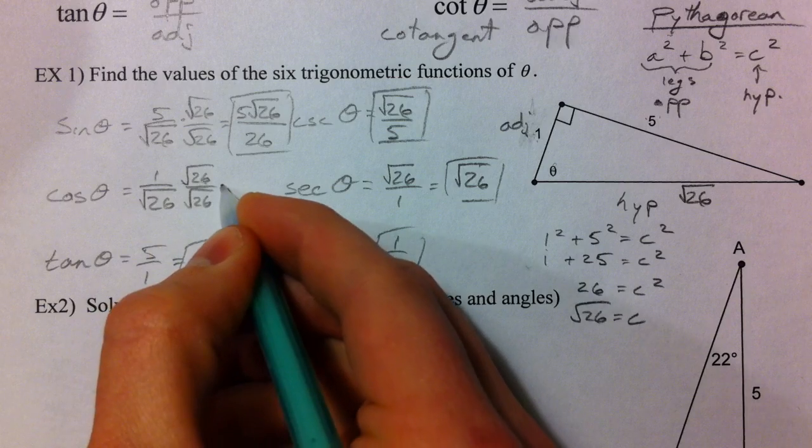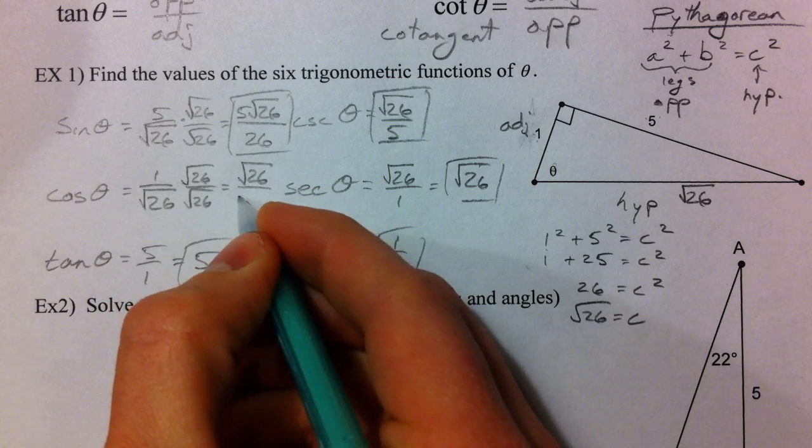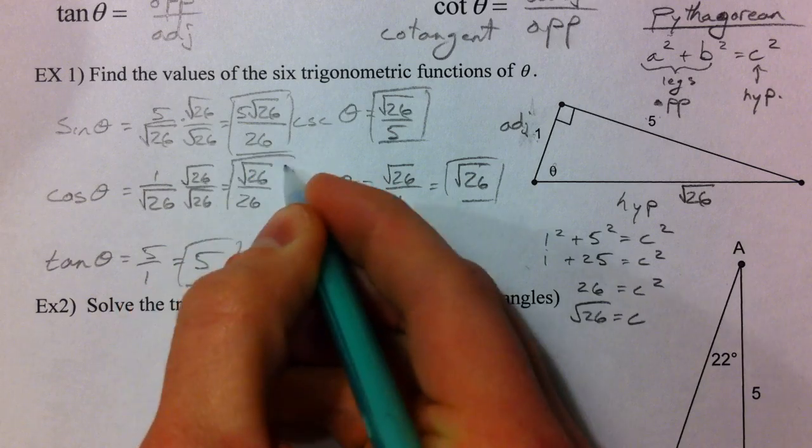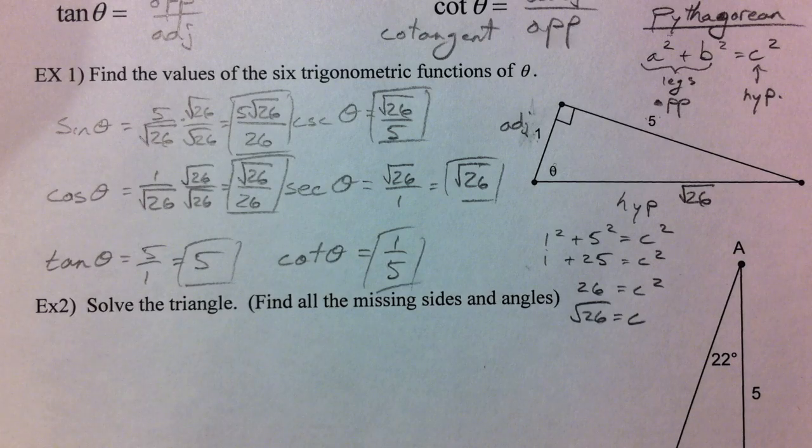Same thing, multiply by root 26 over root 26, and you get root 26 over 26. It's kind of weird because these don't look exactly like reciprocals after we rationalize.